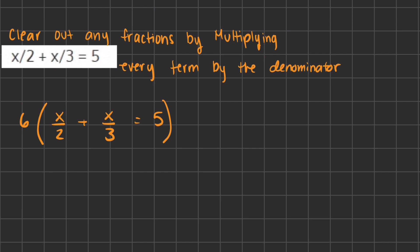In our first term, x divided by 2 — if we simplify the 6 and 2, we get 3 on the numerator, giving us 3x. Then 6 times x divided by 3 simplifies to 2x in the numerator. And 5 times 6 gives us 30. So now we have gotten rid of all our fractions and have a simple combining like terms problem. We have 3x plus 2x, which combined gives us 5x equals 30.